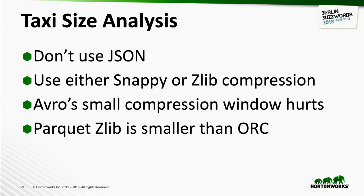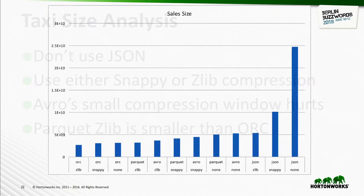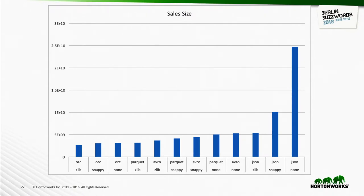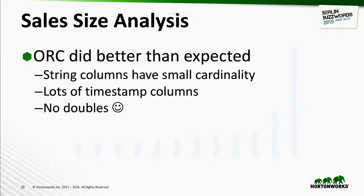Don't use JSON. You should be using either Snappy or Zlib compression. Avro has a small compression window which hurts, and Parquet's Zlib is the smallest. For the sales dataset, we got a very different picture — JSON is still bad, ORC did the best, Parquet next, and Avro just before JSON. The customer whose schema it was based on uses ORC extensively, which is likely a feedback loop where we fix things that don't work well for them.